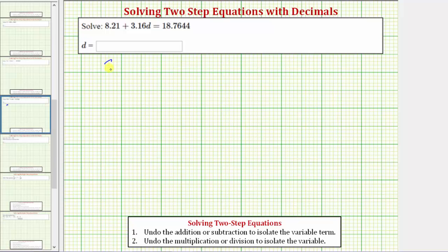So we want to solve the equation 8.21 plus 3.16d equals 18.7644. Because we can solve this equation in two steps, this equation is often called a two-step equation because we can isolate the variable d in two steps.